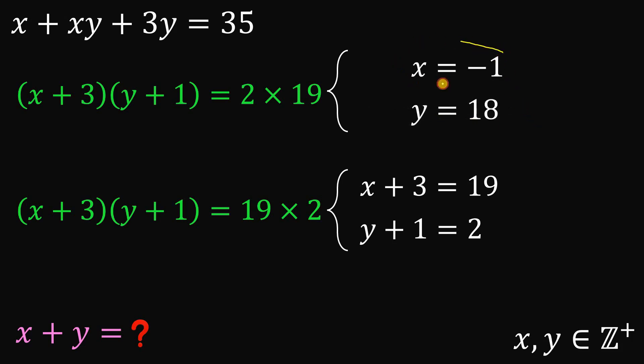And, again, we get that x equals negative 1, which is not possible because x and y are both positive integers. So this case is totally not possible. So this is not possible.